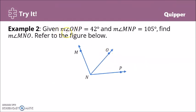Example number two: given the measure of angle ONP is 42 degrees and the measure of angle MNP — the bigger angle — is 105 degrees, find the measure of angle MNO.